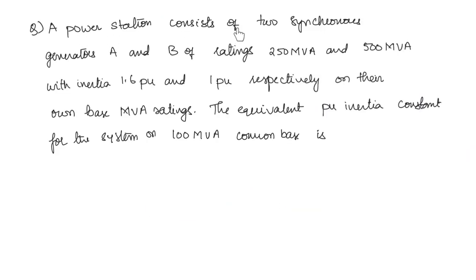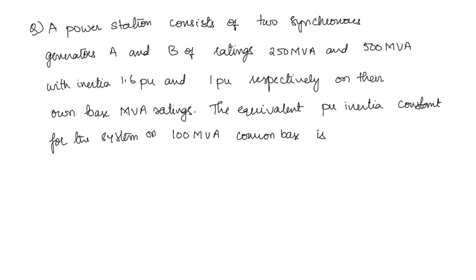A power station consists of two synchronous generators A and B of ratings 250 MVA and 500 MVA with inertia constants 1.6 per unit and 1 per unit respectively on their own base MVA ratings. The equivalent per unit inertia constant for the system on a 100 MVA common base is?